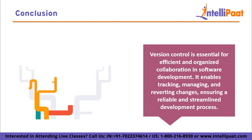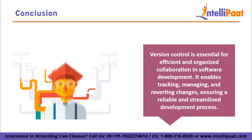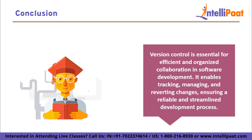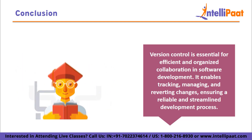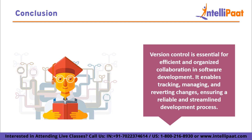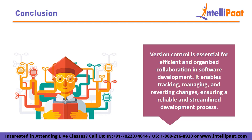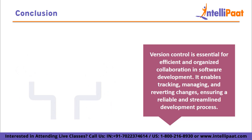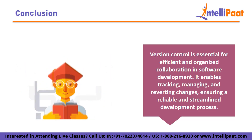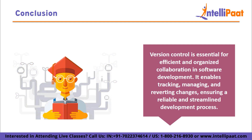Conclusion: version control is a critical and indispensable tool for modern software development teams. By utilizing a distributed version control system like Git and following best practices, developers can efficiently track changes, collaborate seamlessly, and maintain code quality. Branching and merging strategies enable parallel development and an organized codebase, while frequent commits with descriptive messages provide clear insights into the project's evolution. Code reviews foster collaboration, ensuring higher code quality and knowledge sharing. Employing tags for releases and regular synchronization with the central repository keeps history organized and up to date. Integrating version control with a CI/CD pipeline automates testing and deployment, leading to more reliable and efficient software development. Ultimately, version control empowers teams to work cohesively, iterate confidently, and deliver successful projects with reduced risk and increased productivity.